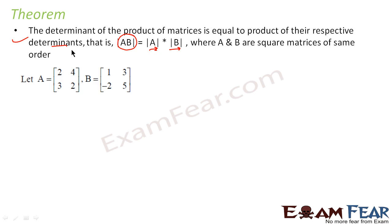Let's take this example where we have A equal to the matrix [2, 4; 3, 2] and B equal to [1, 3; -2, 5]. Here we have to prove that determinant of AB is equal to determinant of A into determinant of B.